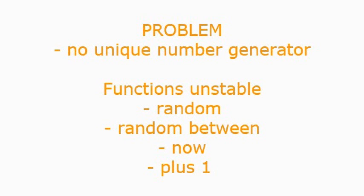As soon as any function is performed on the spreadsheet, these numbers change. You can't have a student number that constantly changes, you can't have an asset number that constantly changes. These numbers need to be stable, specific, and constant throughout the process.